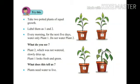Children, let us now try out one activity. Take two potted plants of equal growth. Label them as one and two. Every morning for the next five days, water only plant one. Do not water plant two. Children, what do you see? Plant two, which was not watered, slowly dried up.